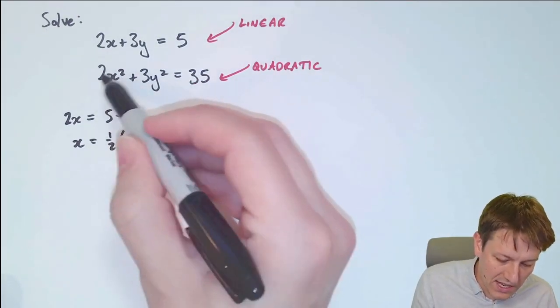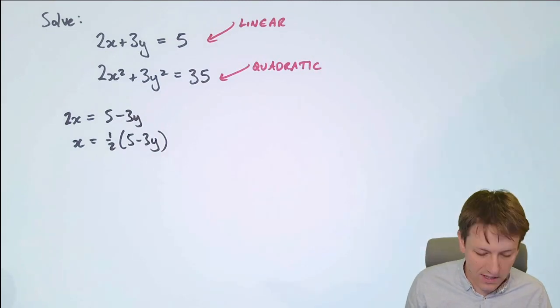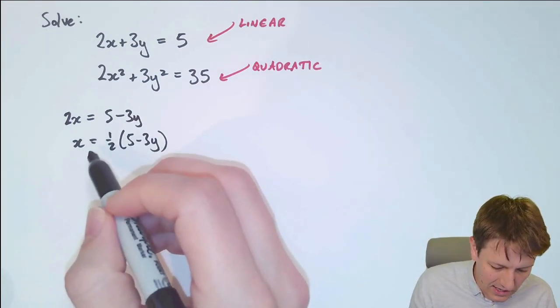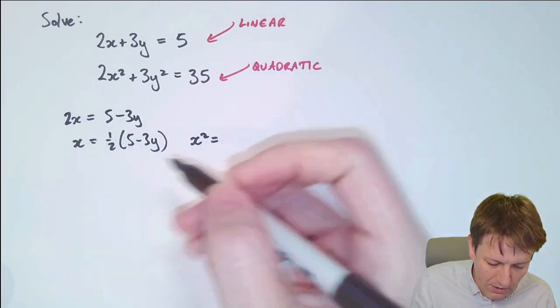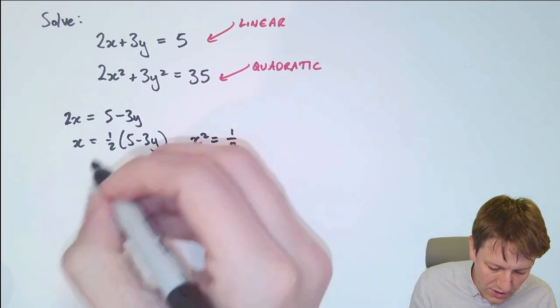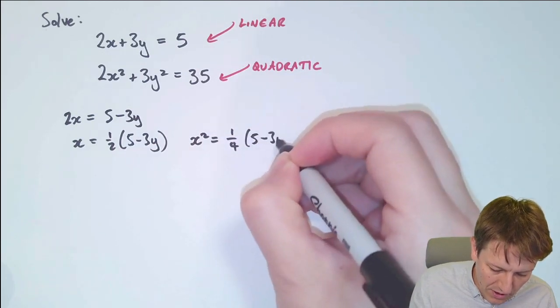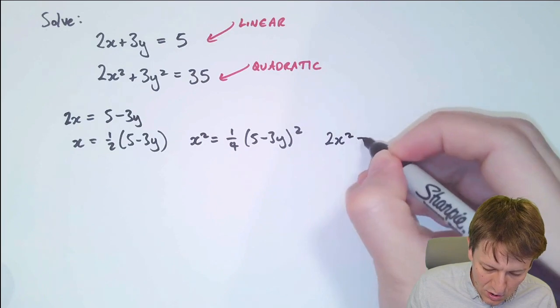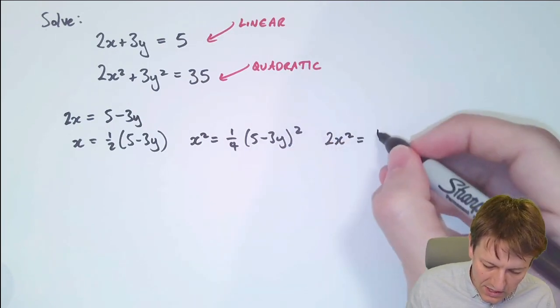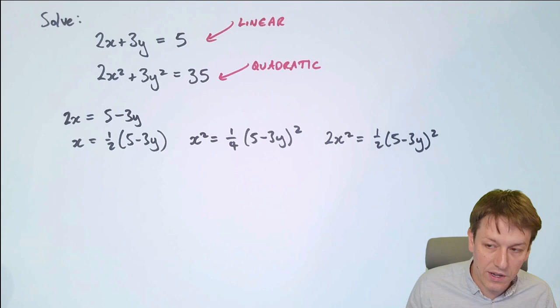Now we want to substitute that into the quadratic equation. To make it slightly easier I'm actually going to start by writing that x squared here, squaring both sides, would be a quarter, which is a half squared, multiplied by 5 minus 3y squared. And we could go even further and say 2x squared then is 2 times this, which is a half 5 minus 3y squared.